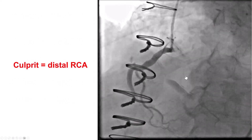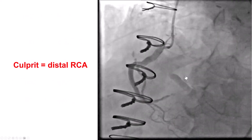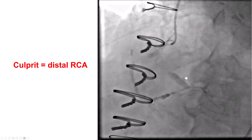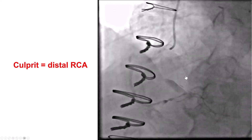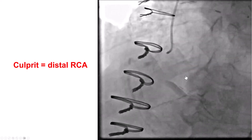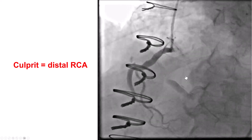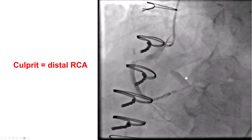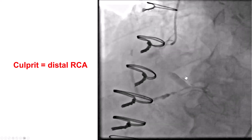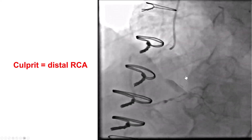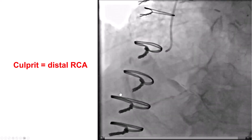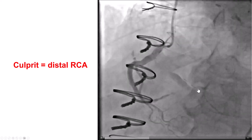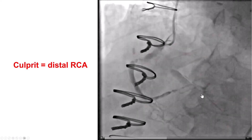So, what's the culprit? It took a while. Of course, at very early hours when people are sleep-deprived, the judgment is not the best. But eventually, after a lot of thinking and looking at the images, and given the inferior ST elevation, we decided that probably the culprit was the distal coronary artery supplying this posterolateral branch.